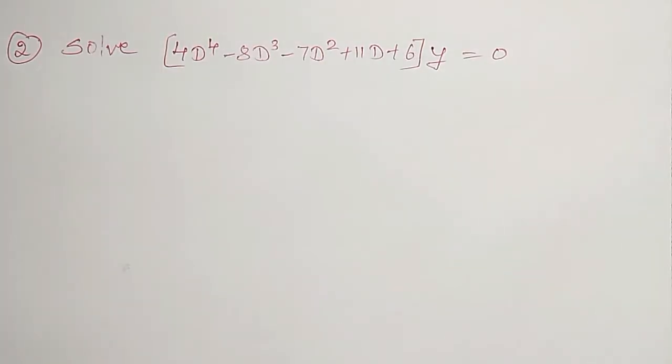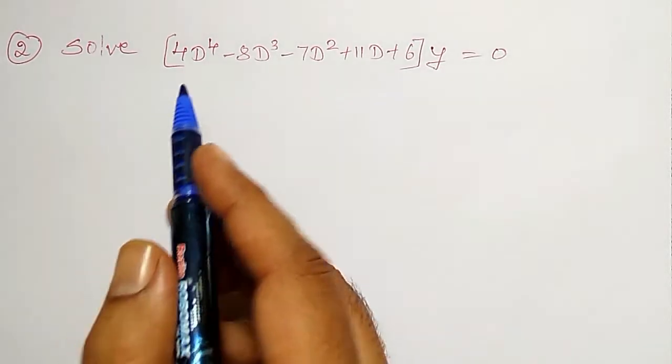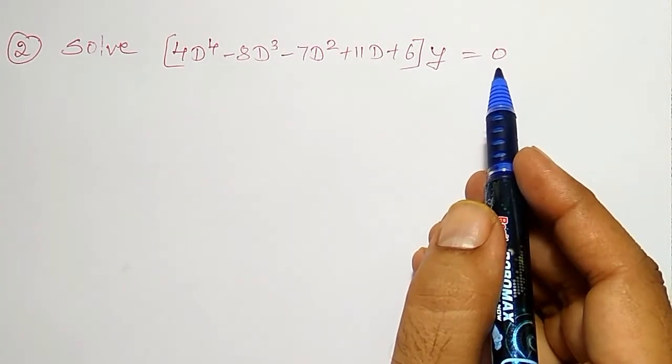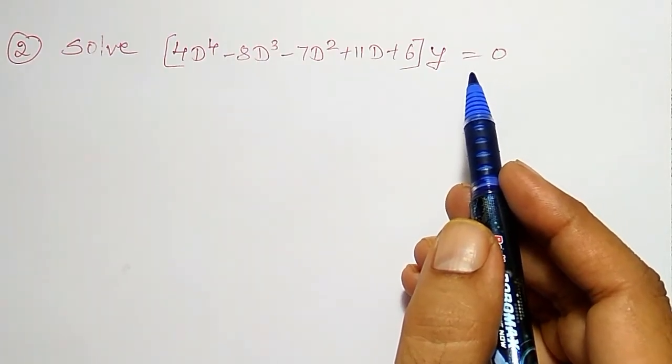In this video, another example of order 4 homogeneous differential equation I am going to solve here. In this differential equation, the right hand side is 0, that's why it is called homogeneous and the solution is nothing but only CF.